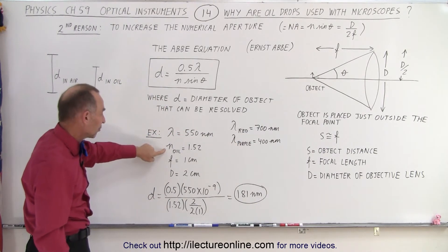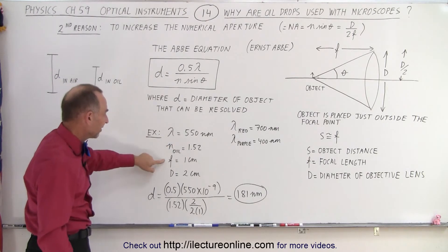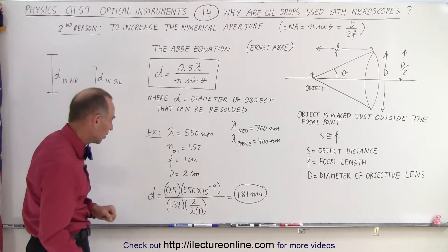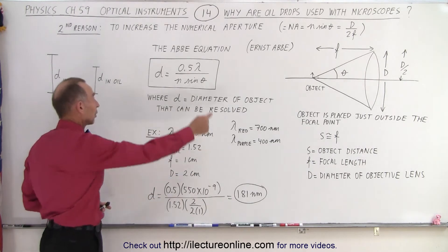The index of refraction of the immersion oil being 1.52, let's say the focal length of the lens is 1 centimeter, the diameter is equal to 2 centimeters, and then we plug that into our equation.